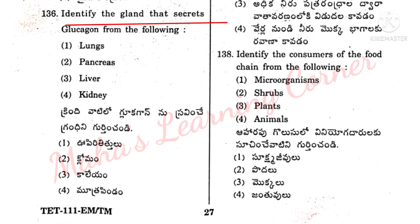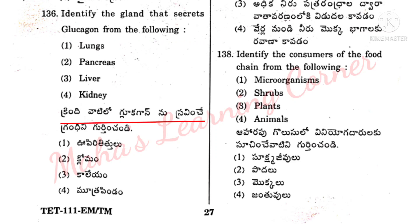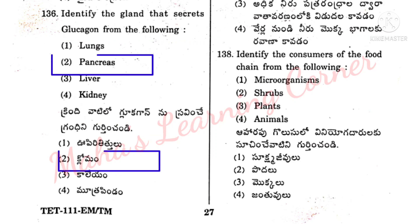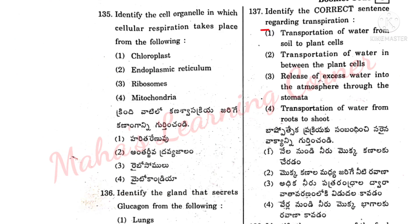Identify the gland that secretes glucagon from the following. Krindi vatil lho glucagon no sravince grandhe ni guttin chandhi. Correct answer, Option 2: Pancreas. Pancreas is the correct answer.